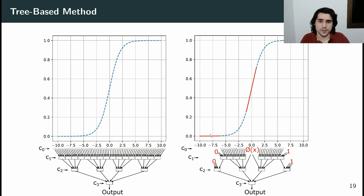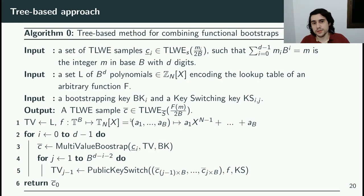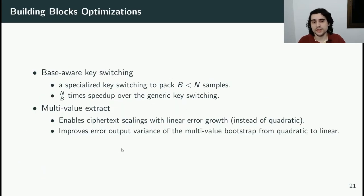This method also enables optimizations based on the specific properties of the function. For example, the sigmoid has two intervals that are almost constant values and one interval that is almost linear — we can replace all three, reducing the number of lookup tables to evaluate. This is the algorithm for this method, and here we see its two main building blocks: the multi-value bootstrap and the public key-switch. We present optimizations for both.